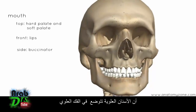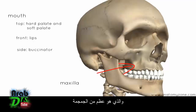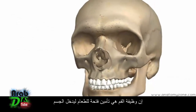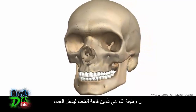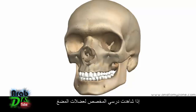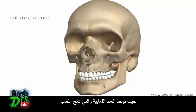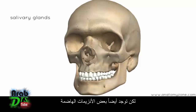On this model, the upper teeth sit in the maxilla, which is a bone of the skull, and the lower teeth sit in the mandible. The function of the mouth is to provide an opening for food to enter the body and to mechanically digest food by chewing. It also begins chemical digestion via salivary glands, which produce saliva. Saliva consists mainly of water but also contains enzymes like salivary amylase, which breaks down starches into sugar.